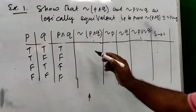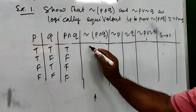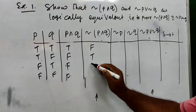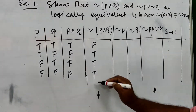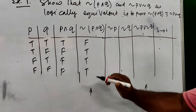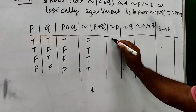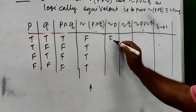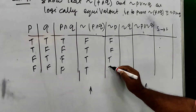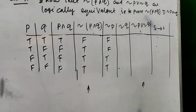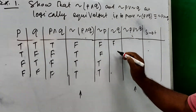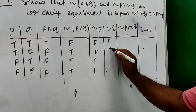Now the negation of P conjunction Q: that is false, true, true, true. Now negation of P: that is false, false, true, true. So what is negation P? False, false, true, true.